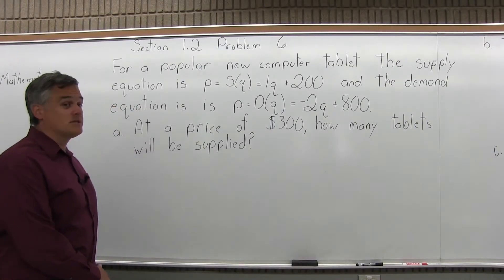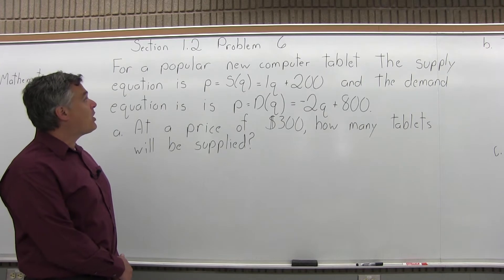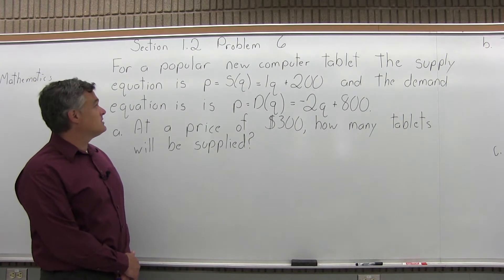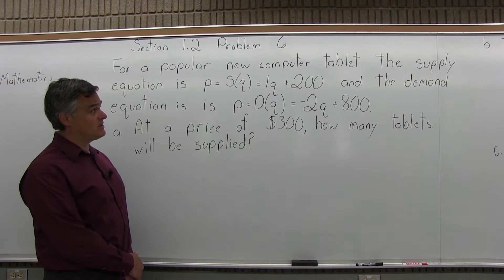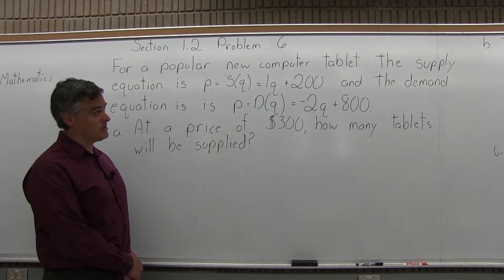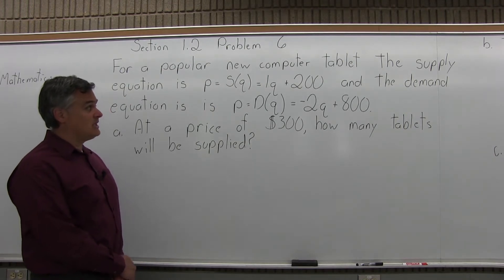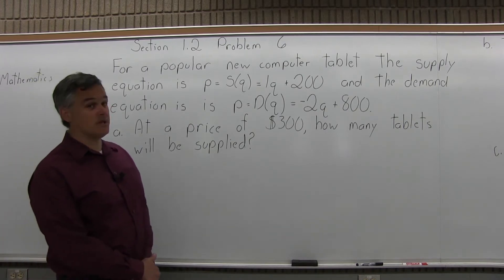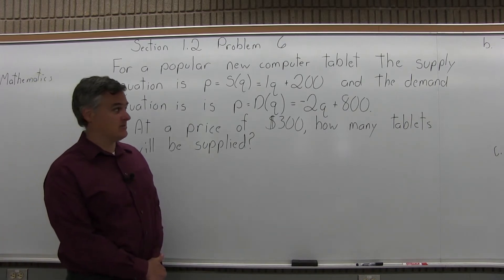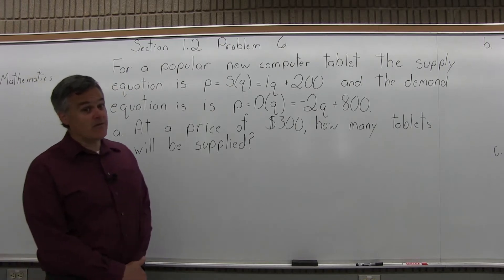This is Problem 6 from Section 1.2 of the homework. It says: for a popular new computer tablet, the supply equation is P equals S(Q) equals 1Q plus 200, and the demand equation is P equals D(Q) equals negative 2Q plus 800. Based on that, there are five parts.